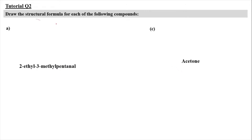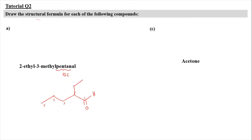For tutorial equation 2, we have to draw the structural formula for each compound. We have 2-ethyl-3-methylpentanal. Pentanal is a 5-carbon chain ending in an aldehyde, always at the end of the chain, numbered from carbon 1. At carbon number 2, we attach an ethyl group (CH2CH3), and at carbon number 3, we attach a methyl group.